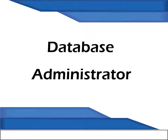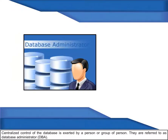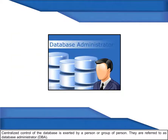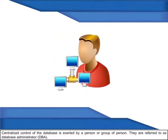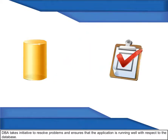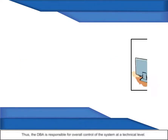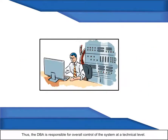Database Administrator (DBA): Centralized control of the database is exerted by a person or group of persons referred to as the database administrator (DBA). The DBA takes initiative to resolve problems and ensures that the application is running well with respect to the database. The DBA is responsible for overall control of the system at the technical level.